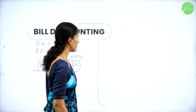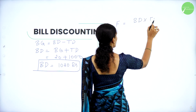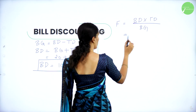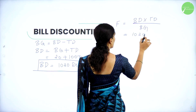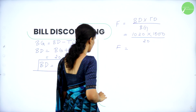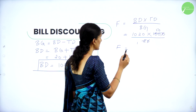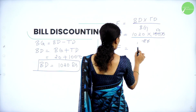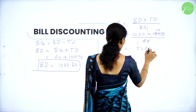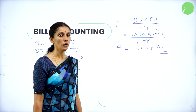Next we will calculate face value of the bill. Face value is given by banker's discount multiplied by true discount divided by banker's gain. So that is 1020 into 1000 divided by 20. Cancelling zeros, you will get the value as Rs. 51,000. So your face value of the bill is Rs. 51,000.